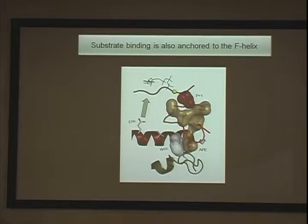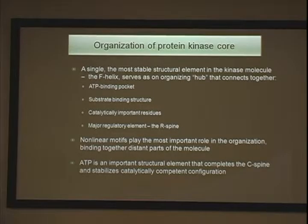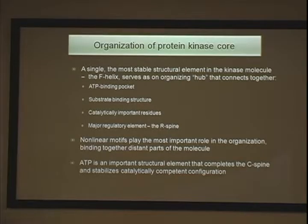We looked at kinases across eukaryotes, and the alignment is pretty highly conserved and very precise. So we have these two spines — the regulatory spine and the catalytic spine — that come from two different parts of the F-helix. In between them sits the gatekeeper. ATP is positioned precisely, and the catalytic loop is also bound very precisely to the F-helix, providing the orientation of three catalytically important residues. Substrate binding is also organized around the F-helix: the P+1 peptide comes up to the P+1 loop, and E230 binds the substrate arginines. Finally, we have an organization of the kinase core around the F-helix through these two spines. The D-helix, which I was always wondering about, turns out to be simply part of the C-spine.